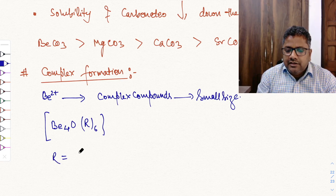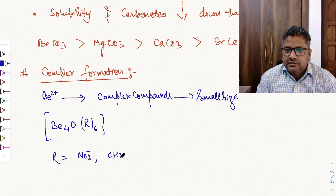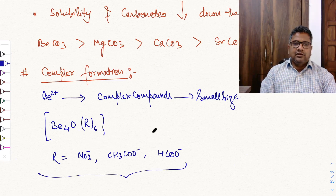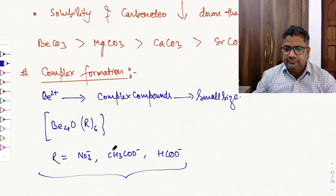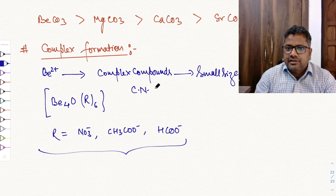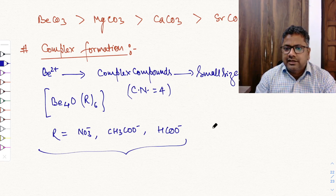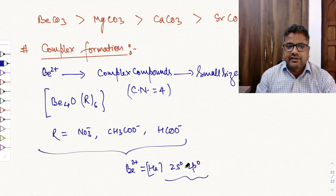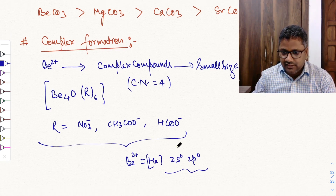In the Be4O(R)6 complexes, the coordination number of beryllium is 4. This is because Be2+ has an electronic configuration of helium core with 2s0 and 2p0 — giving 4 available orbitals (1 from 2s and 3 from 2p), so coordination number 4 is possible. Examples: if R = NO3−, the compound is basic beryllium nitrate; if R = CH3COO−, it is basic beryllium acetate.